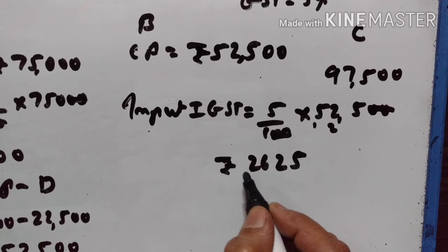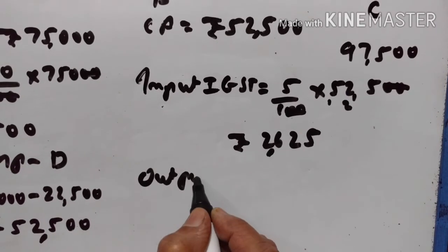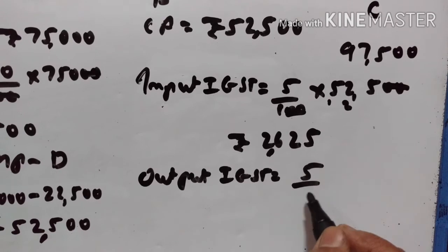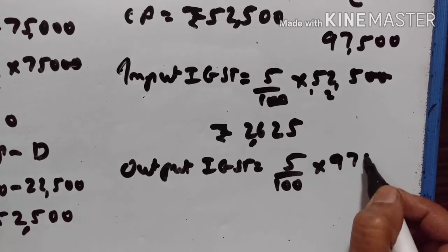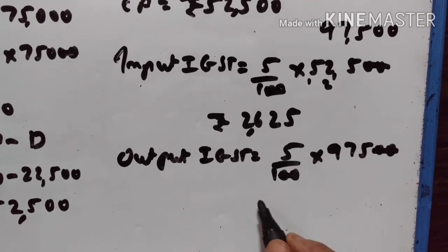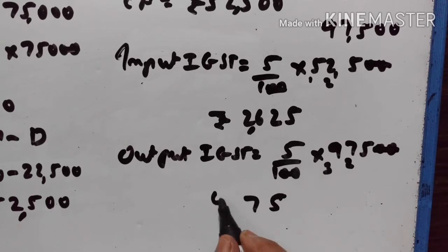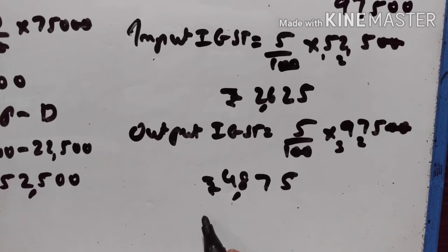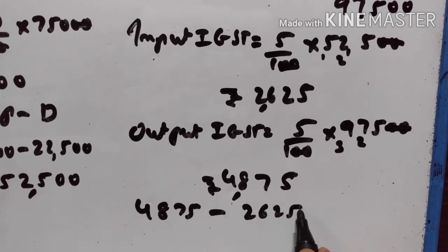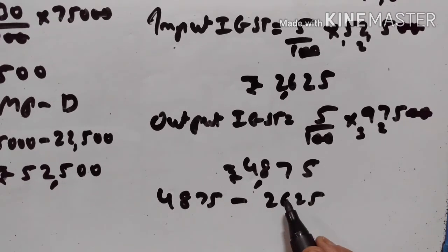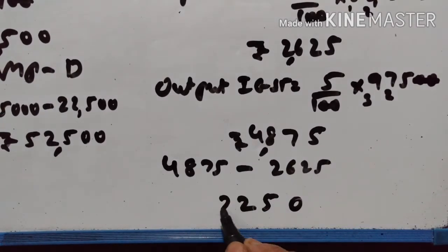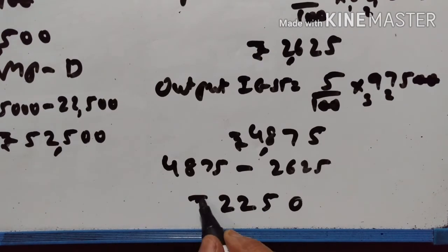Input IGST is Rs.2,625. Output tax is equal to 5% of Rs.97,500, which is Rs.4,875. So the tax paid by B to the government is equal to output GST minus input GST: Rs.4,875 minus Rs.2,625 equals Rs.2,250.